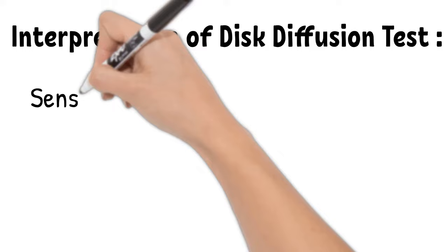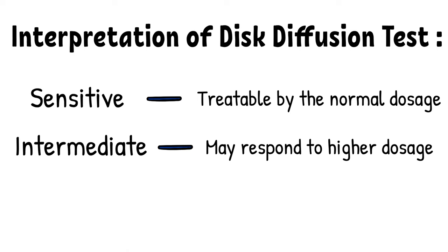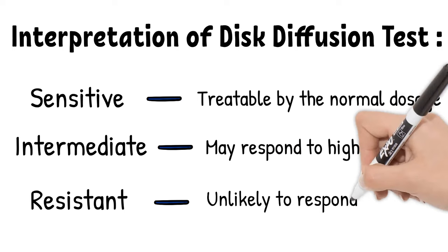Interpretations of disc diffusion test. Sensitive means infection treatable by the normal doses of the antibiotic. Intermediate means infections may respond to a higher dosage. Resistant means unlikely to respond to usual doses of the antibiotics.